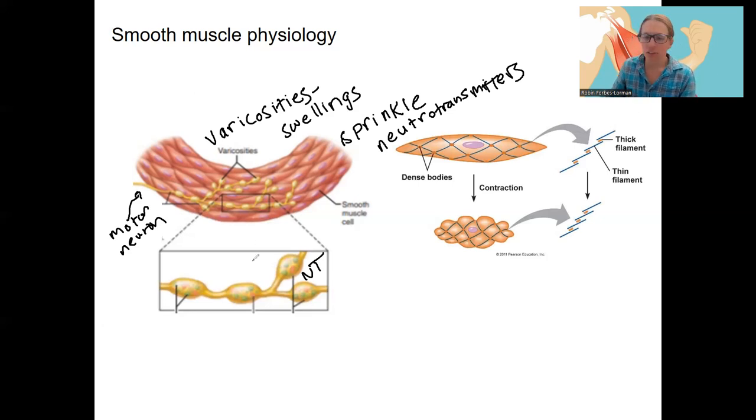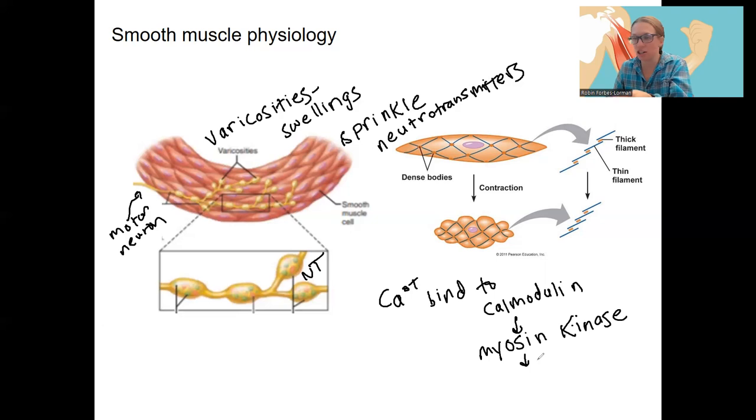there is actually no troponin. Instead, we're going to have calcium bind to calmodulin, calcium modulated protein, that is going to activate myosin kinase, which is going to phosphorylate the myosin heads. So that is similar to our skeletal muscle. So myosin kinase so that we can phosphorylate our myosin head and they can bind to actin. So that initiation step.